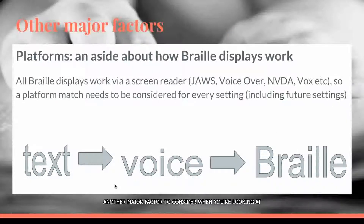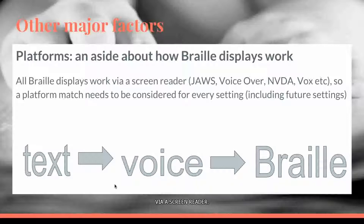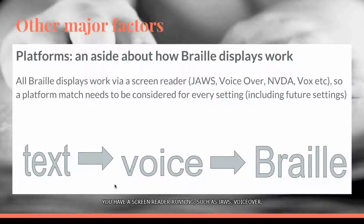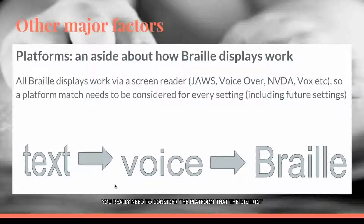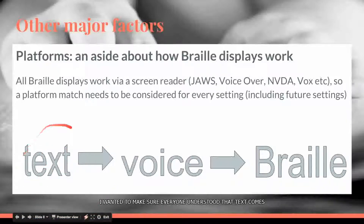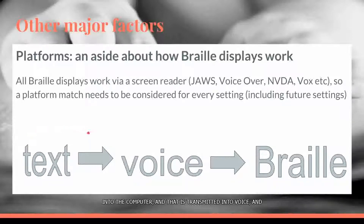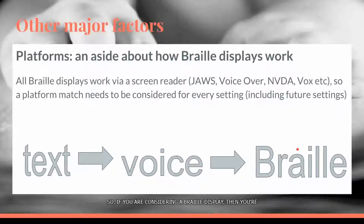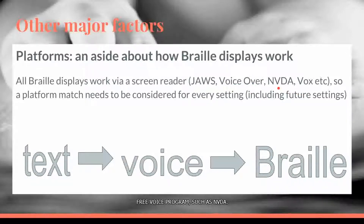Another major factor to consider when looking at braille displays specifically is that braille displays work via a screen reader. Those little bumps going up and down will only do so if you have a screen reader running, such as JAWS, VoiceOver, NVDA, or Vox. So if you're considering a braille display for a student, you really need to consider the platform that the district uses and ensure the braille display is compatible. Text comes into the computer, is transmitted into voice, and only then does it become braille on the display. So considering a braille display also means considering either the purchase or downloading of a free voice program such as NVDA.